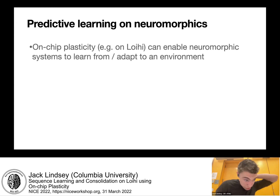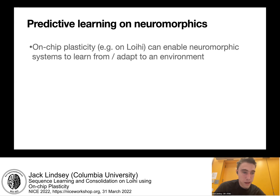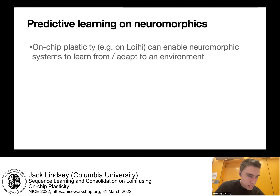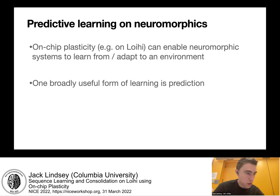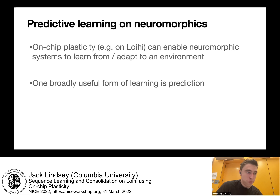In recent years, neuromorphic chips have started to provide more and more capability to flexibly handle on-chip plasticity, meaning changes to synaptic connection strengths using programmable local learning rules. What we'd like to demonstrate here is an instance of using on-chip plasticity to solve a useful learning problem, namely the problem of learning to make predictions based on temporal structure in an environment.